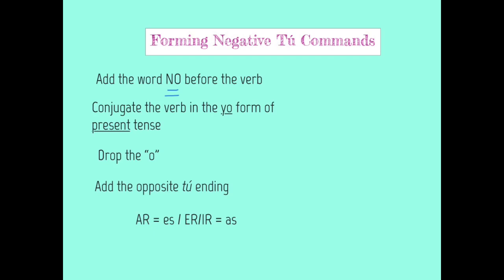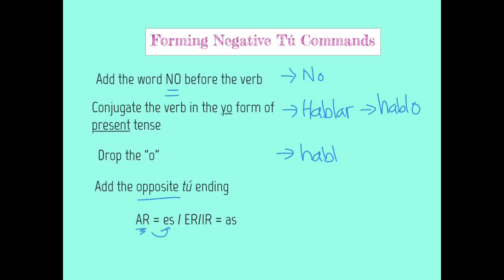This is pretty easy. We conjugate the verb in the yo form of the present tense. So for example, my first step is no — I need to remember to include that. Second step, conjugate the verb in the yo form of the present tense. Let's say I have hablar — that would be hablo. My next step is to drop the o, and then I add the opposite tú ending. So hablar is an AR verb, so I will add ES onto the end — hables. Putting this together with the no forms the full command: no hables. Don't talk. That's how it works with an AR verb.